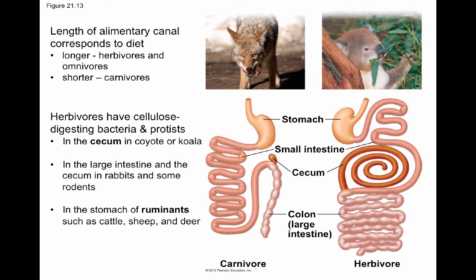When looking at digestive systems, you can often tell what kind of diet an animal has. Longer overall digestive systems belong to herbivores and omnivores, since it takes longer to break down plant material. A long cecum — the pouch between the small and large intestine — is also a sign of herbivory. A koala, for example, has a very large cecum where bacteria and protists live that help it digest cellulose, since it lacks the enzymes to digest leaves itself.